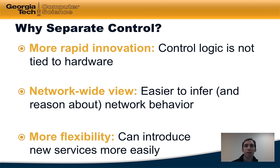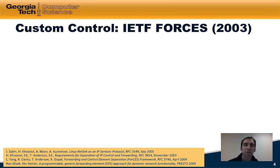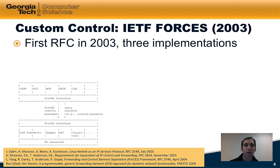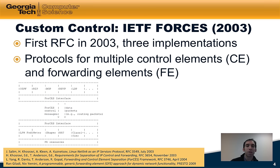Let's now look at three different ways that were developed to control packet switch networks. The first instance of a separate control channel for packet switch networks came out of the Internet Engineering Task Force in the form of the Forces Protocol. The protocol was first standardized in 2003 and there were three implementations of this particular standard. The standard essentially defined protocols that would allow multiple control elements to control forwarding elements, which would be responsible for forwarding packets, metering, shaping, and performing traffic classification.